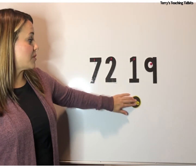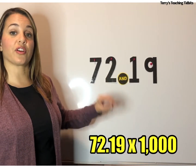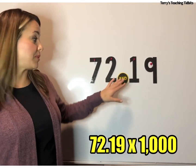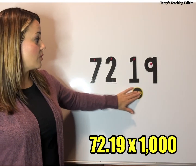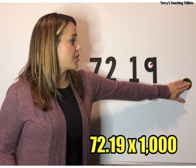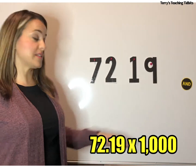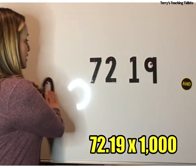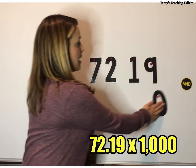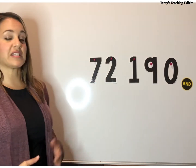And if you're going to multiply it by three powers of 10, you're going to move the decimal point three places — one, two, and a third place. We need something to take the place of the ones, so we put a zero in there. We end up with 72,190.